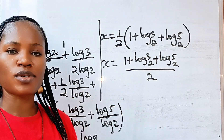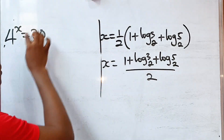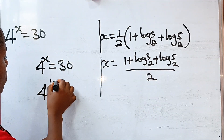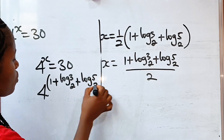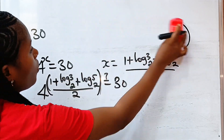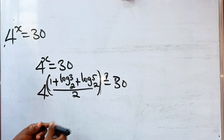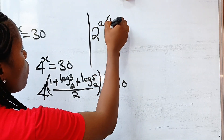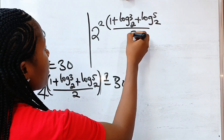Now let's prove that the answer is correct — that's the most amazing aspect of this video. The equation says 4 to the power of x equals 30, and x equals (1 + log₂3 + log₂5)/2. Since 4 equals 2 squared, we have 2² raised to the power of (1 + log₂3 + log₂5)/2.